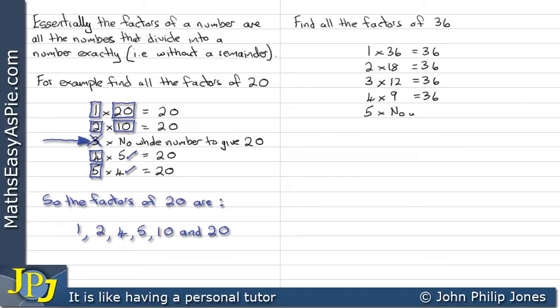Now in this particular case, we can find no whole number to give 36. Then we go to 6, and we multiply that by 6, and that gives us 36. And now we can see we've repeated the 6. So when we have a repeat like this, we know we stop writing down what looks a bit like a times table.